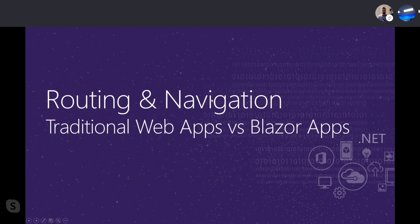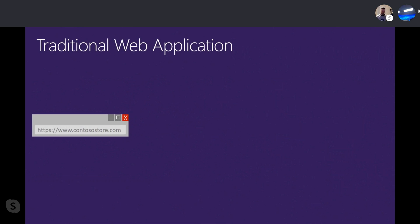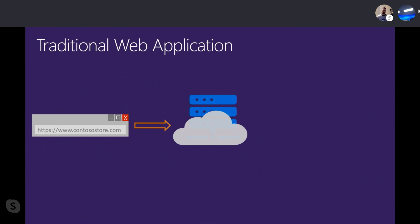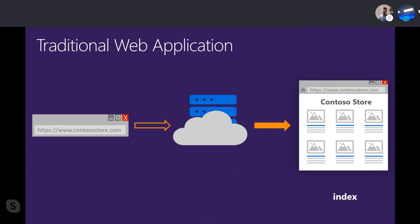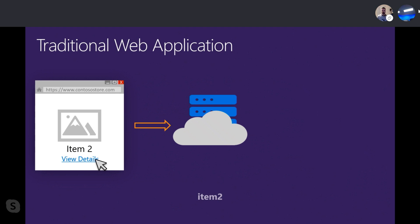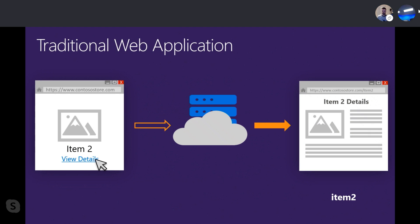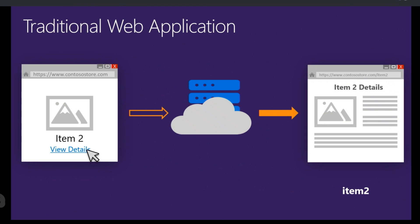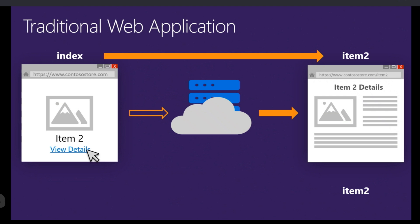Let's start with some fundamentals: what's the difference between traditional web apps and Blazor apps in terms of routing and navigation? In a traditional web app, you type an address, go to a server, get the initial page back, and the browser renders it. When you click links, every time you go back to the server, download a whole page, and render a whole new page — whether using HTML, MVC, or Razor Pages.